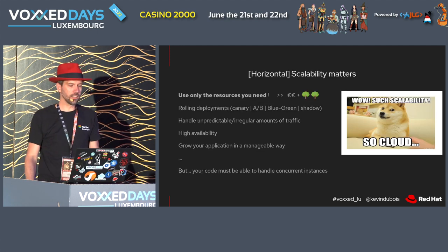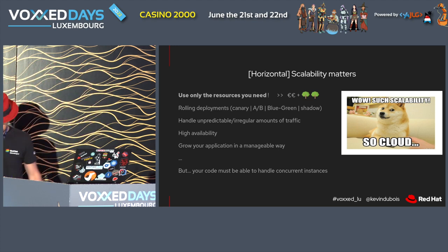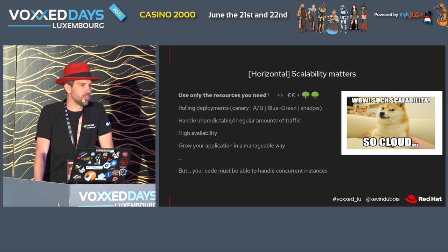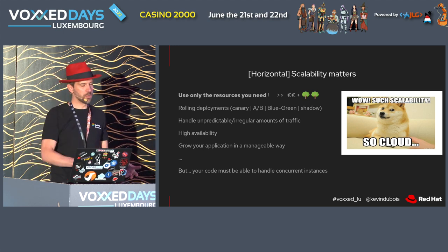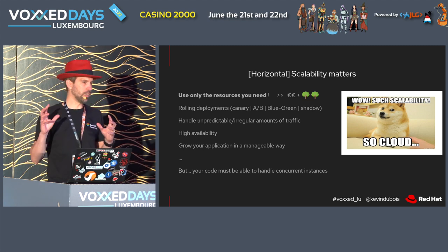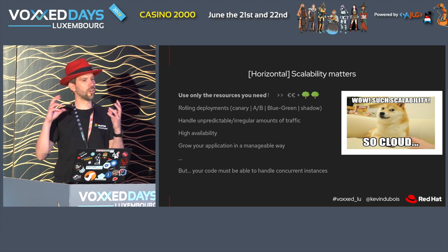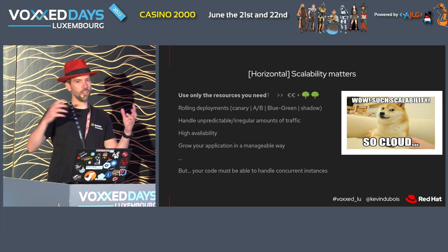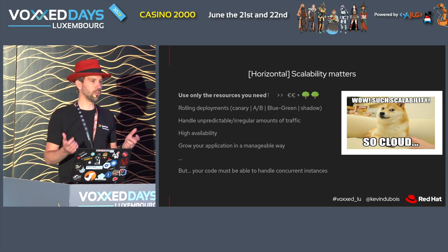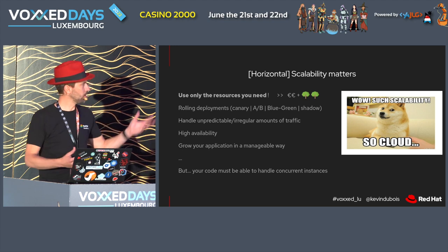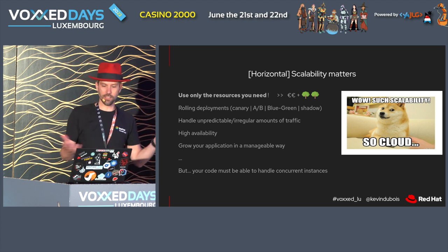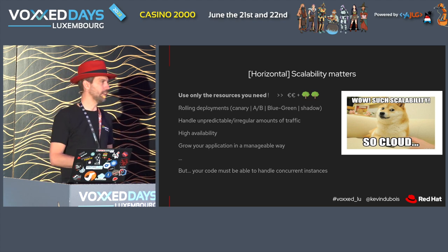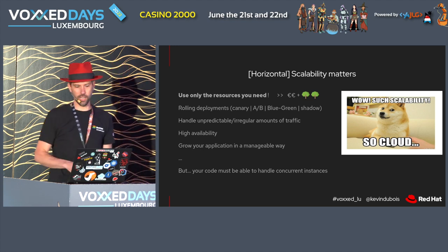So horizontal scaling — why should we care about that? On the one hand, you want to use only the resources that you need. We want to focus on using the least amount of resources for the most amount of outcomes. In terms of money, if we're in the cloud, we're not spending more than we need to. It's also important for the environment — less resources means less electricity, and Mother Earth is a little happier.